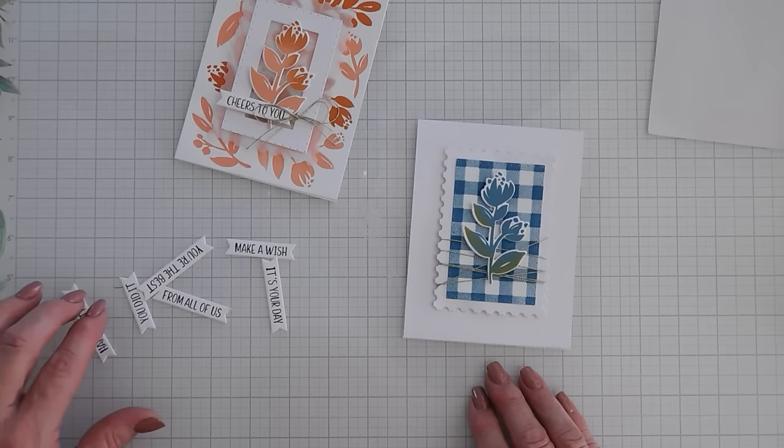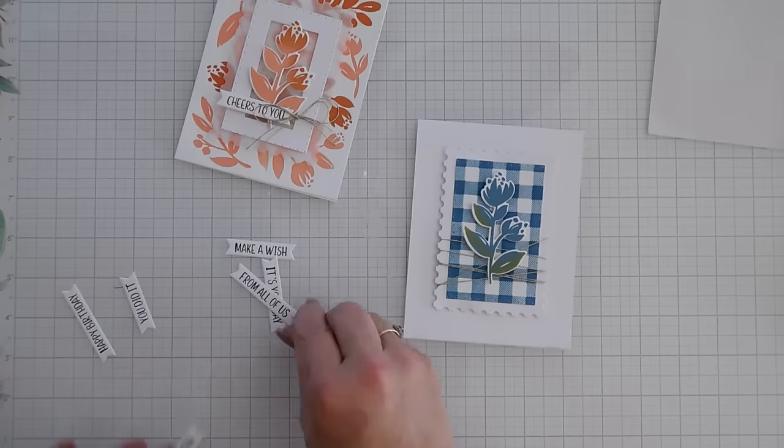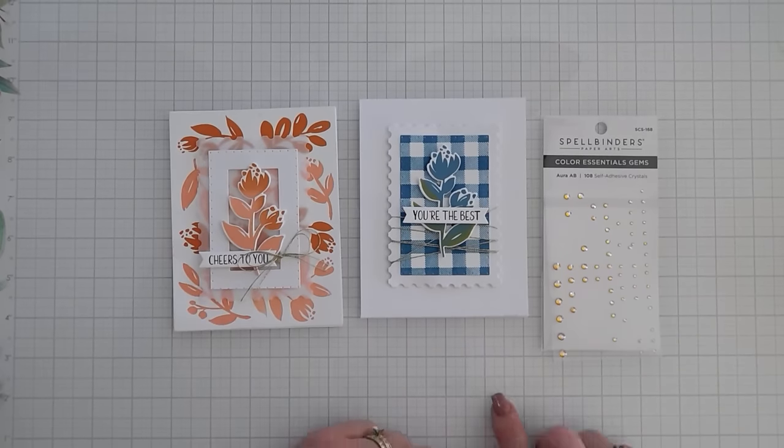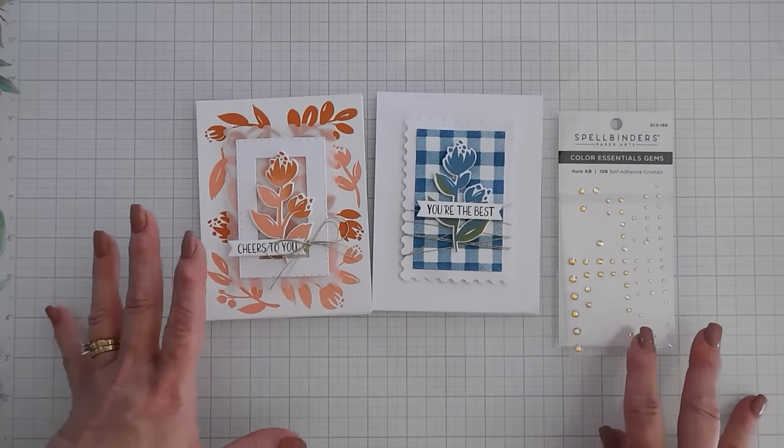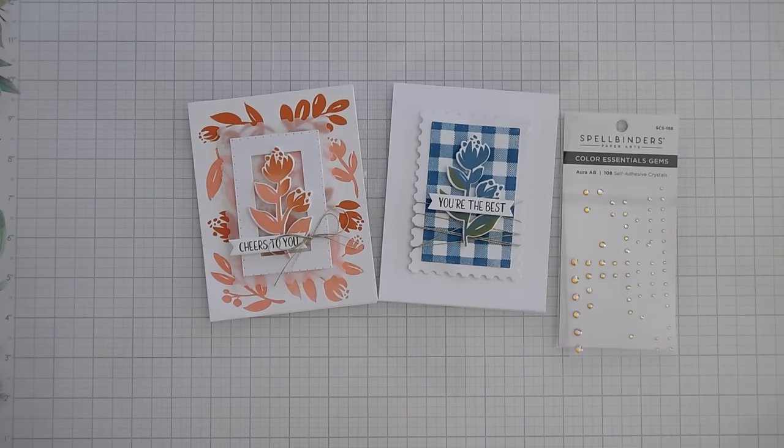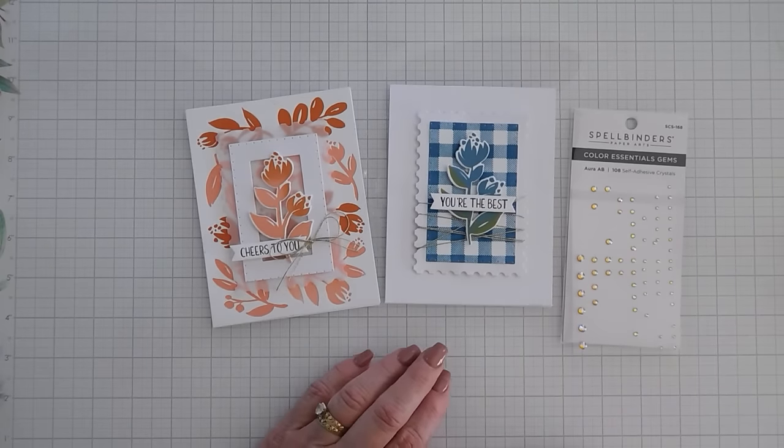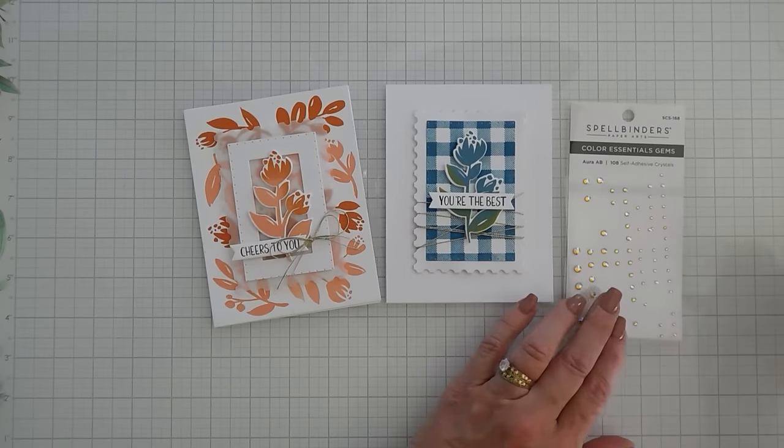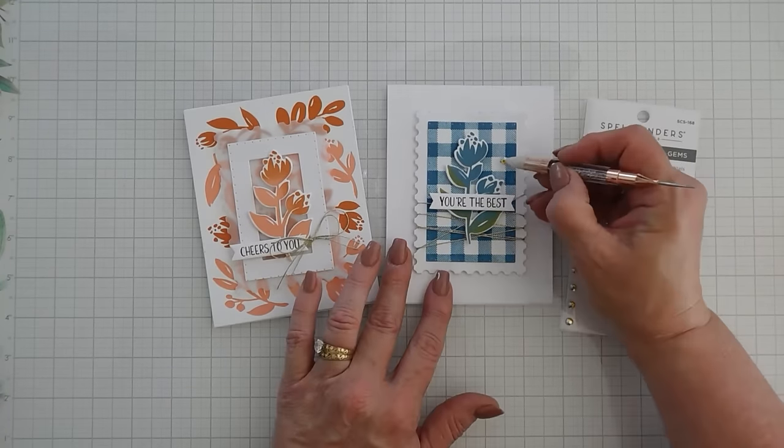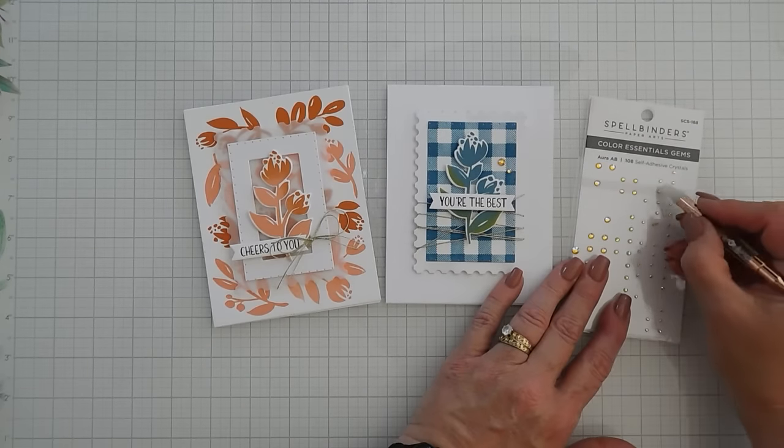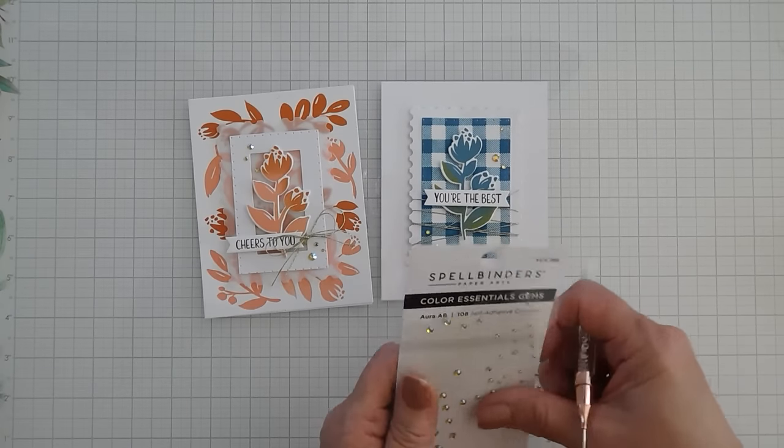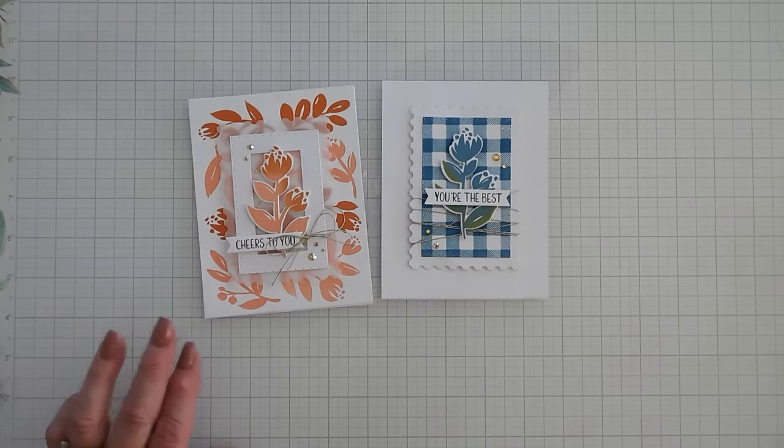Kind of hard to tell on camera. But there's something there. And then I'll take this panel and we'll just add this right in the center. And let's add a greeting. This one is kind of playful. Maybe we'll just put, you're the best. I think the colors are working out better on their own versus combining them. So, we kind of got two for one today with my sudden change of plans. I am going to finish the card off with some Spellbinders Color Essential Gems. These are the Aura AB Gems. And we're just going to add a few. So now we have a little bit of shimmer. That's just what we needed. And that will finish off my card projects today.